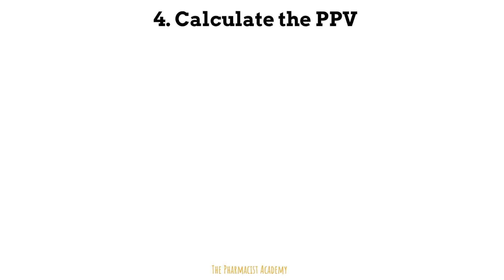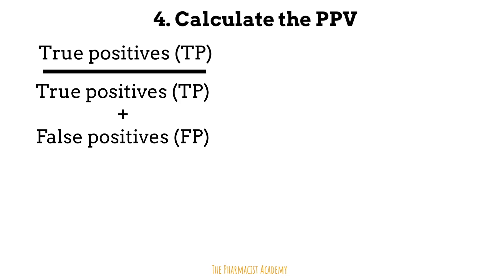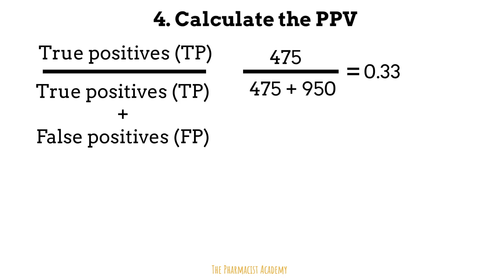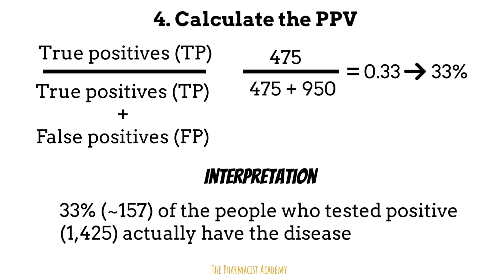Calculating the PPV helps us determine whether a positive test is truly meaningful. To calculate the PPV, we take the true positives and divide by the total of the true positives and the false positives. So it's 475 divided by 475 plus 950, which gives 0.33 or 33%. We interpret this as 33% of the people who tested positive actually have the disease, so we would need a confirmatory test or clinical judgment before diagnosing or treating. In populations with high disease prevalence, PPV increases. If prevalence is low, positive results should be taken with a grain of salt as they are most likely false positives from healthy individuals.